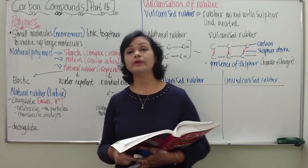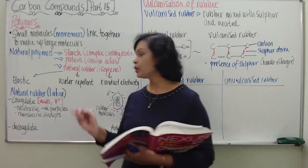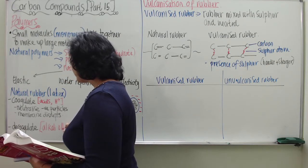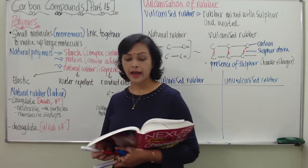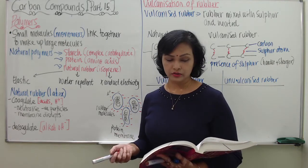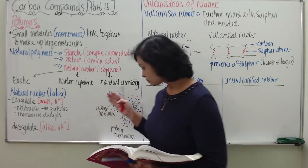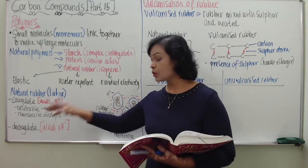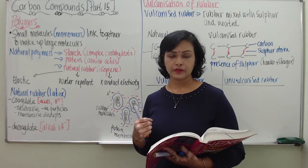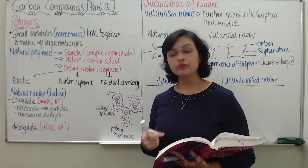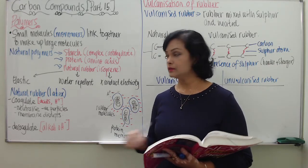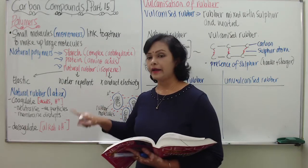The opposite of coagulate is decoagulate. In order to decoagulate natural rubber — meaning we want the rubber back in liquid form — we can add ammonia, for instance ammonium hydroxide. The hydroxide ions in ammonia help to decoagulate the rubber, returning it to liquid form. So to summarize: to coagulate we add acids; to decoagulate and return rubber to liquid form we add an alkali.